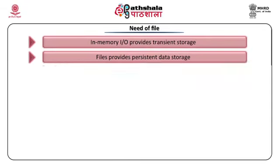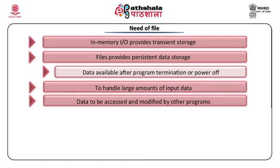What is the need for using a file? When we perform standard IO using in-memory storage, the data is transient — as soon as the program terminates or the power goes off, the data from main memory will be lost and will not be available for next use. If we want the data for next use, it should be stored in persistent storage devices. We use files for storing such data, especially when the data is very large in amount, making it very difficult to input from a keyboard. It is better to store and create the data in files and use it.